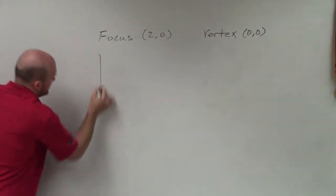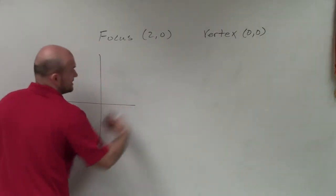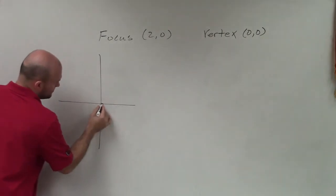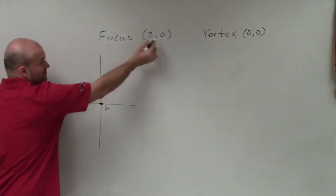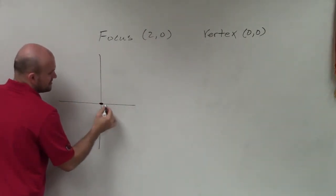So let's go ahead, I'll write that over here. So the first thing it says the vertex is at 0, 0. So I'm going right there. And then it says the focus is at 2 comma 0.